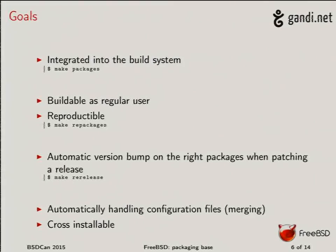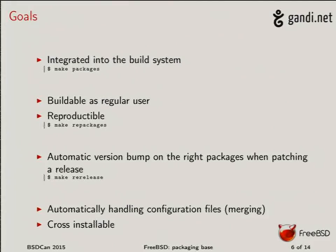We also want automatic handling of all configuration files — the package knows what goes where and what needs to be merged — and we want it to be cross-installable. If I'm on AMD64 and I want to build packages for my ARM box, I run 'make packages' with the magic flags for ARM, create those packages, then use 'package -r this_directory' and install everything there. I have a directory ready for ARM, and that actually works.